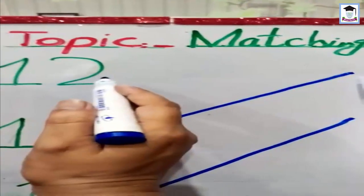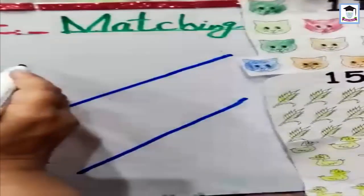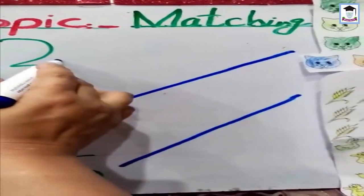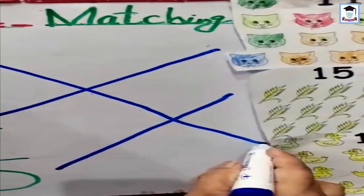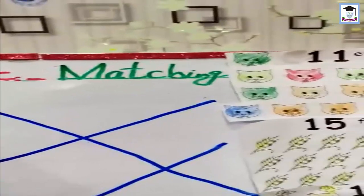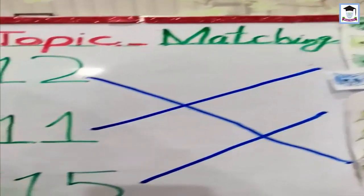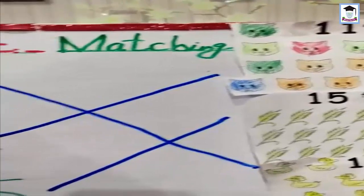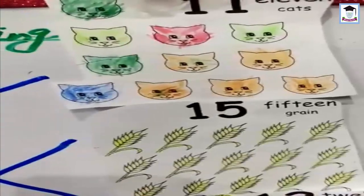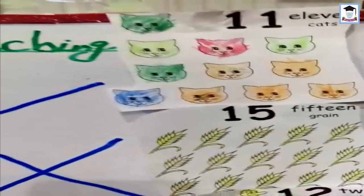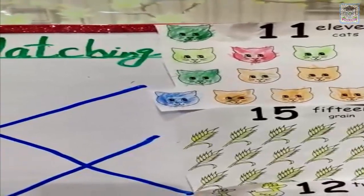This one is 12 — now draw the line. 1, 2 — 12. 1, 1 — 11. 1, 5 — 15. 1, 2 — 12. Okay students, now you will practice these in your copies. Allah please.